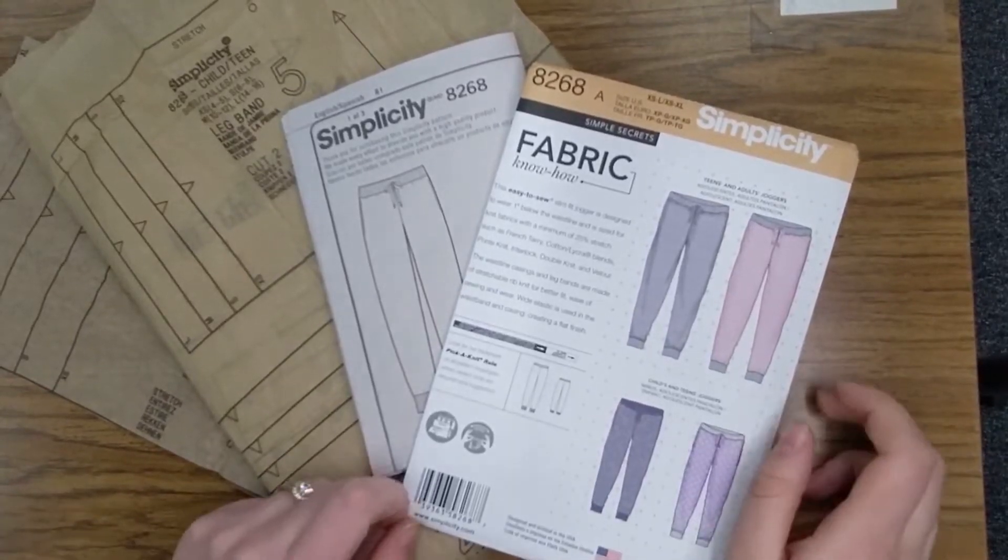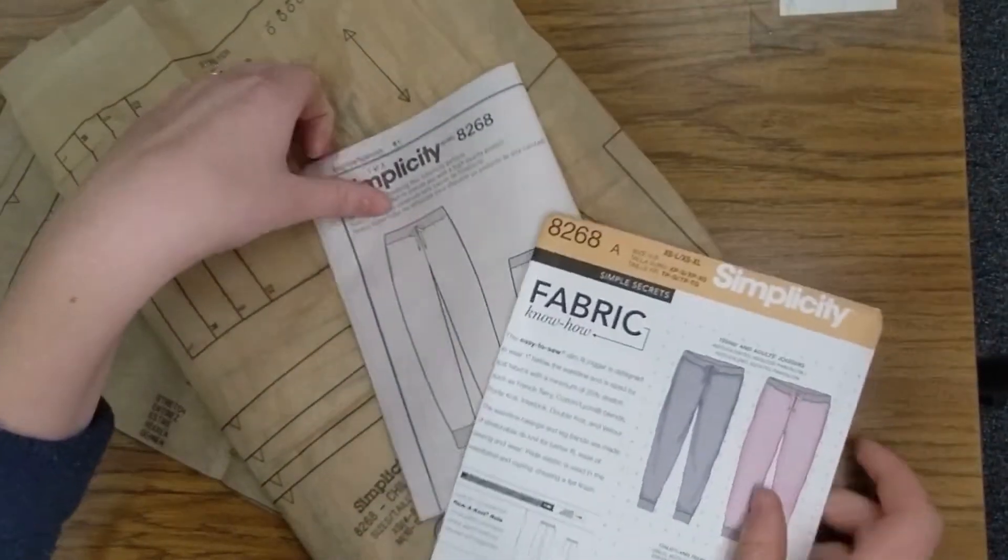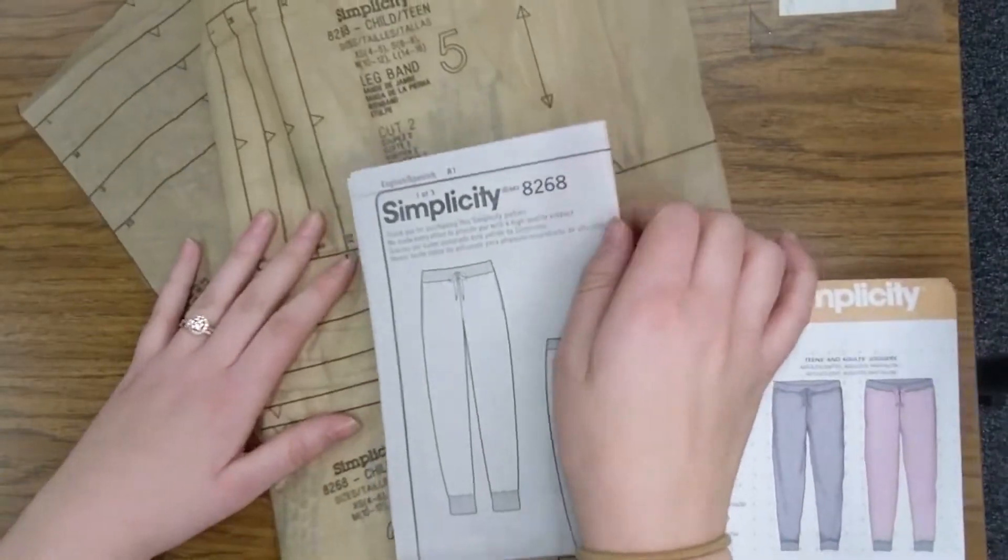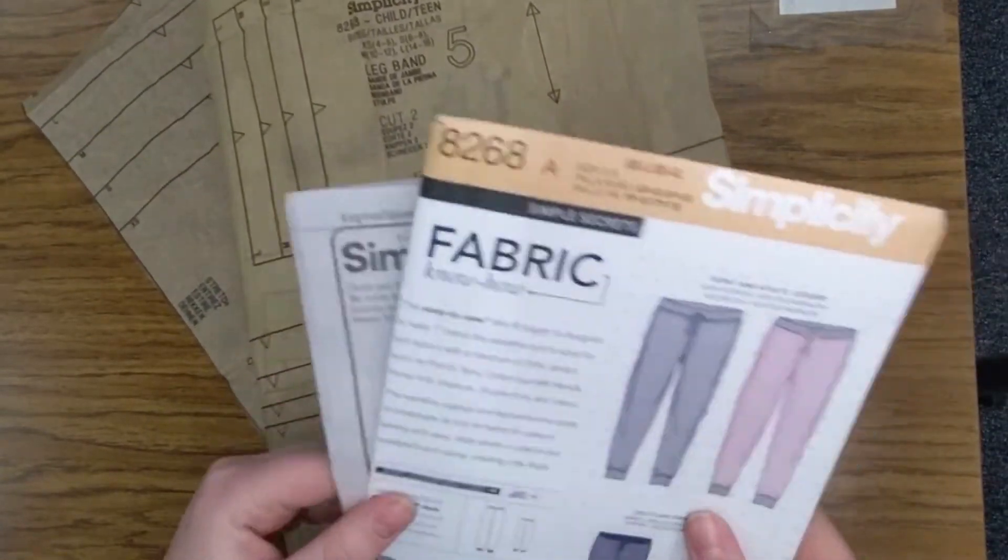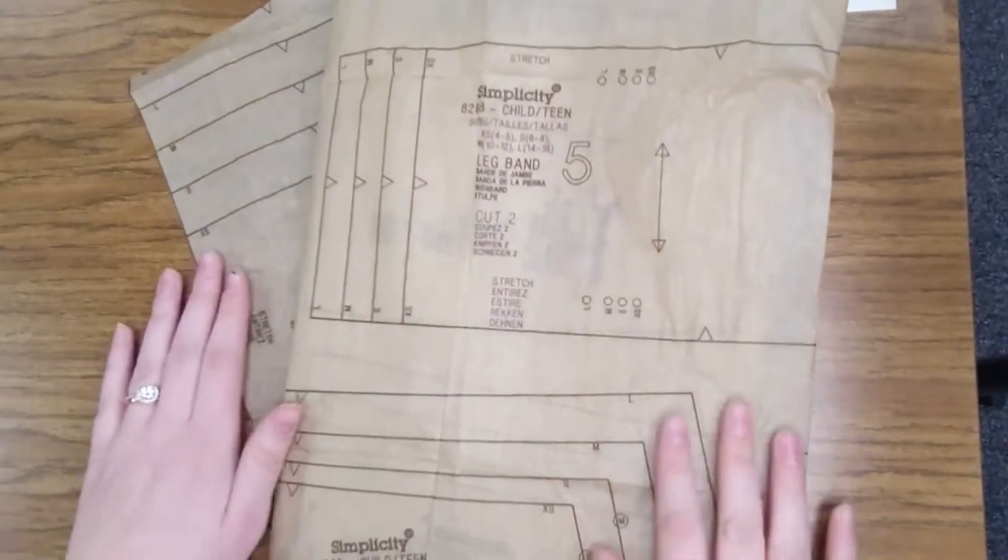Here we have our three parts of the commercial pattern: our pattern envelope, our pattern guide sheet, and our pattern tissue. In this video, we're going to focus mostly on our pattern tissue here, and this is what it looks like.